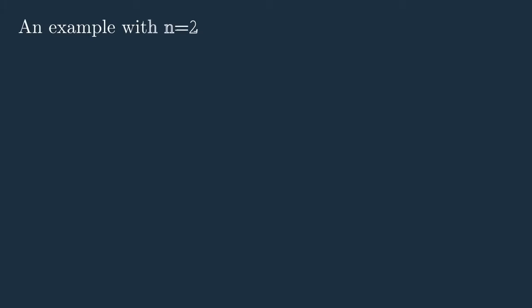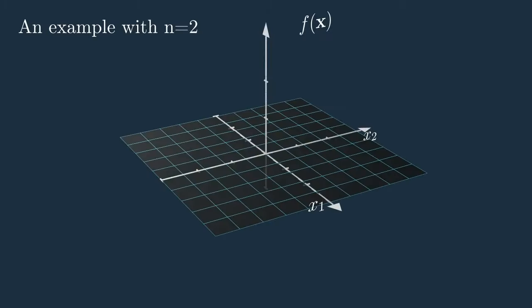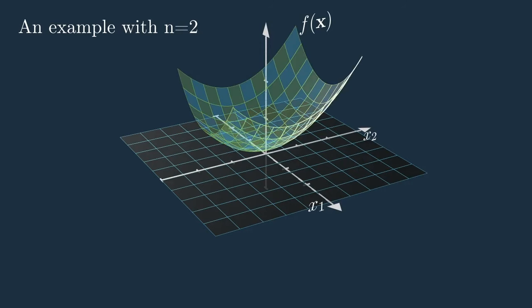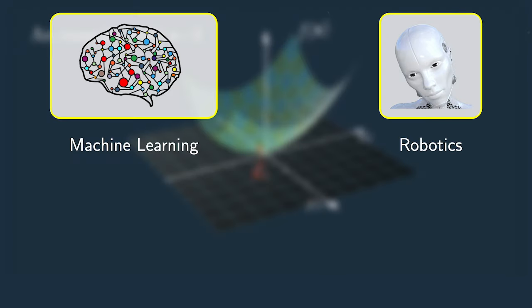One thing you can do of course is simply plot a graph of the function and eyeball where the minimizer is. It seems pretty easy, right? Well, there are two problems with this approach. First, you can only get so much precision out of a plot. Second, and most importantly, we cannot really plot functions that depend on more than two variables. In applications like machine learning and robotics, the functions we want to minimize depend on tens, thousands, sometimes even millions of variables.